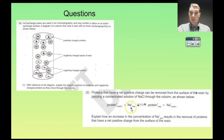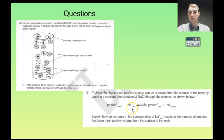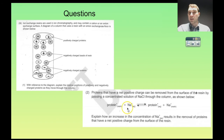Question two asks: proteins with a net positive charge can be removed from the resin surface by passing a concentrated salt solution through the column. Explain how an increase in sodium ion concentration results in removal of positively charged proteins. If we flush through a highly concentrated sodium chloride solution, we're increasing the number of sodium ions in solution, which forces the equilibrium to the right. The protein previously stuck to the resin is now replaced by sodium ions sticking to the resin, and the protein flows through the column and is collected.